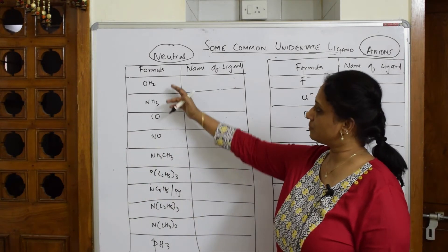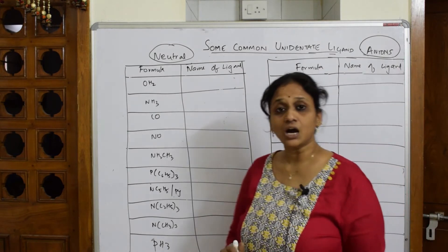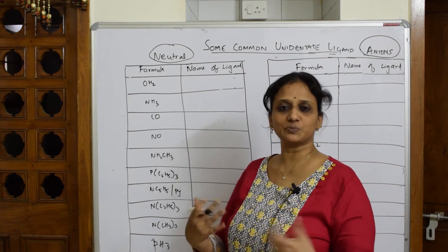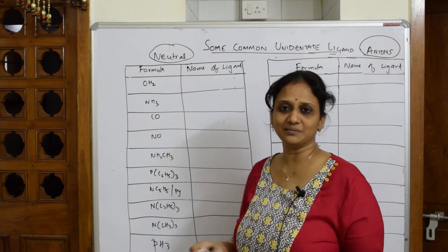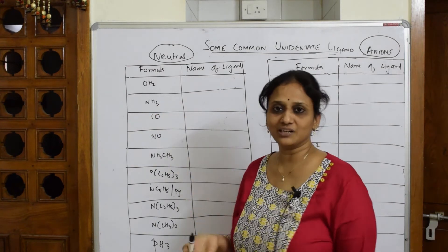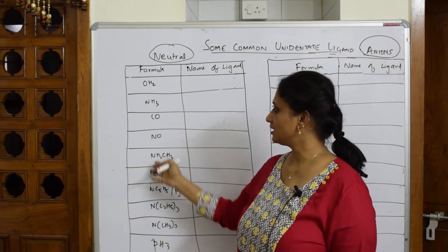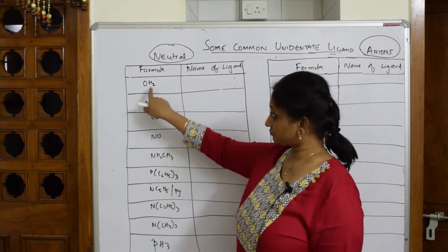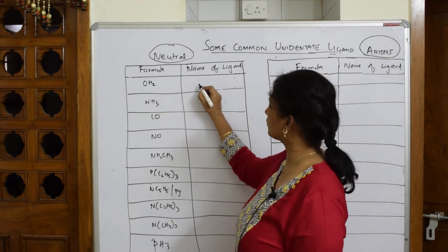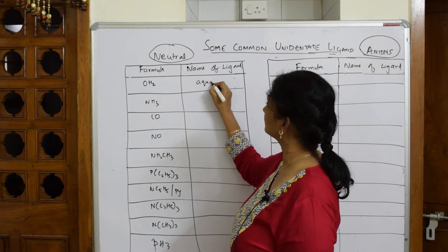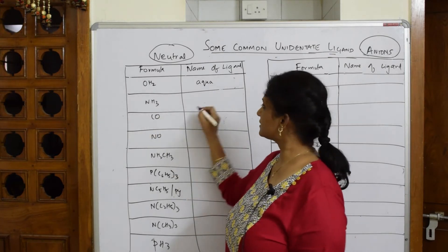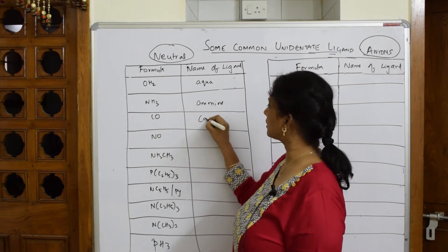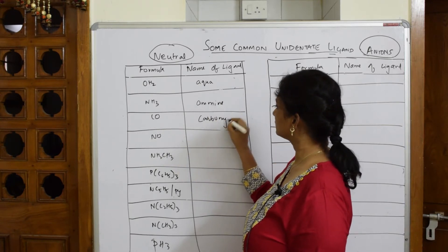Whenever you have neutral ligand, how to name this? It's very simple—just like a general way you speak, like carbonyl, just like that. When you see methyl amine, just like that, nothing changes. So let us start naming this: H2O, I call this aqua. This is amine, simple. CO is called carbonyl—nothing, I'm not changing any suffix or prefix.